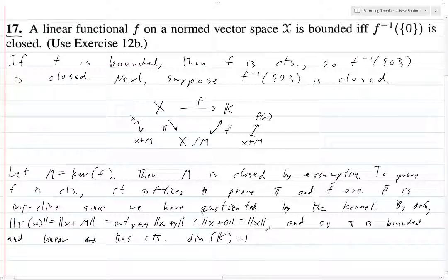The dimension of k is 1, and f bar is injective. So the dimension of x mod m equals 1, because otherwise this would not be injective.